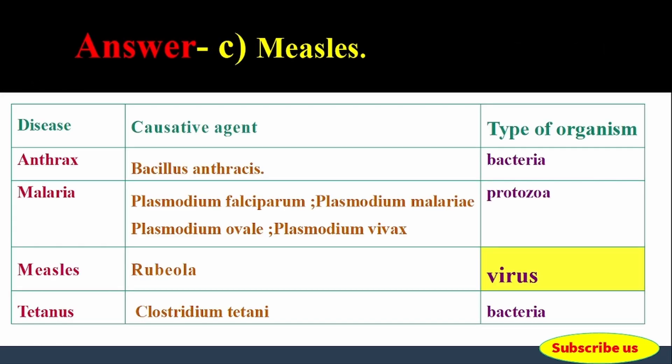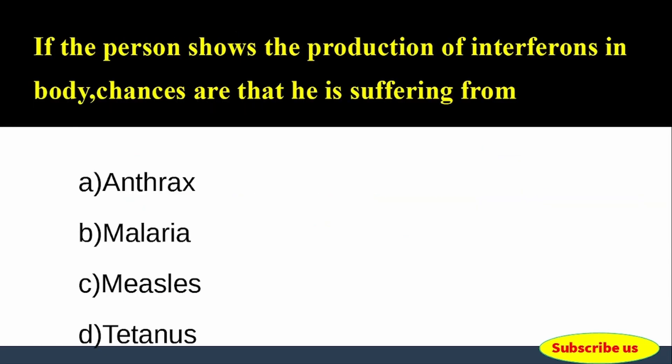Answer: Option C, Measles. If the person shows the production of interferons in the body, chances are that he is suffering from measles, because measles is a viral disease.